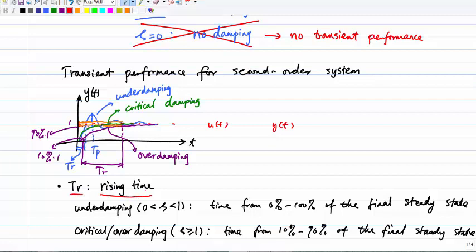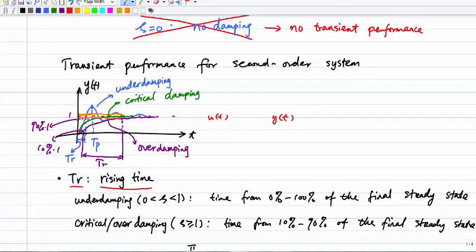For rise time, there are two different definitions depending on the damping case. Case one applies to underdamping, and case two applies to critical damping or overdamping. They are defined differently — they are not the same.